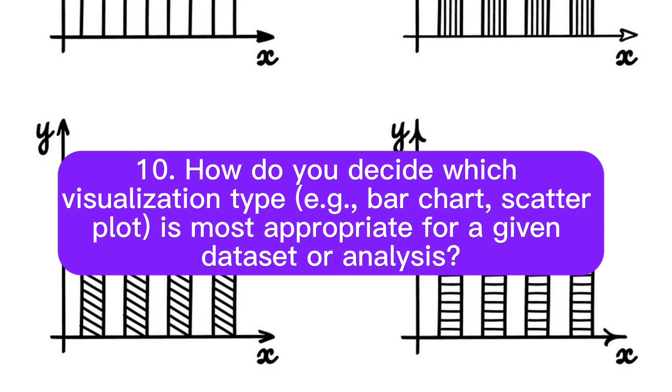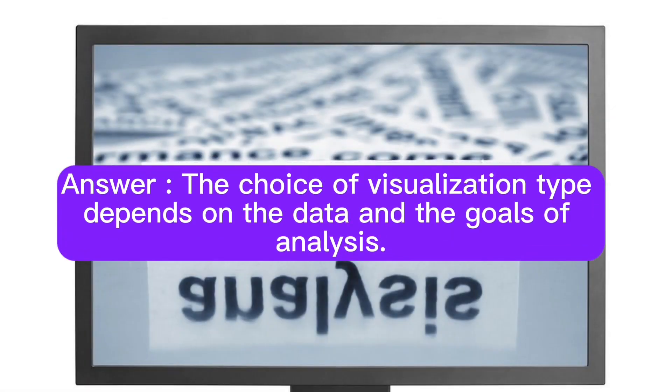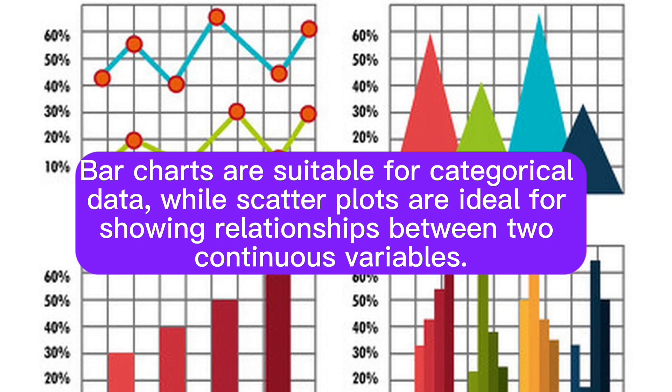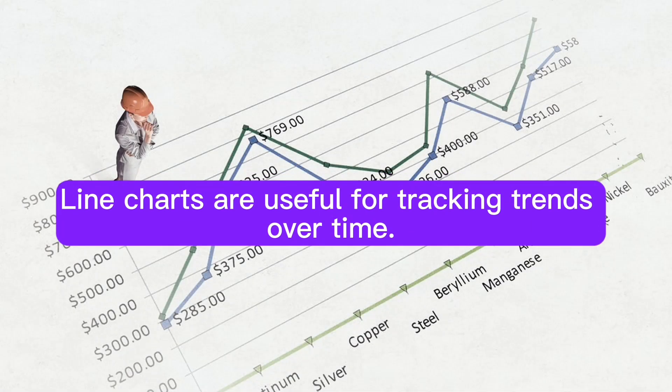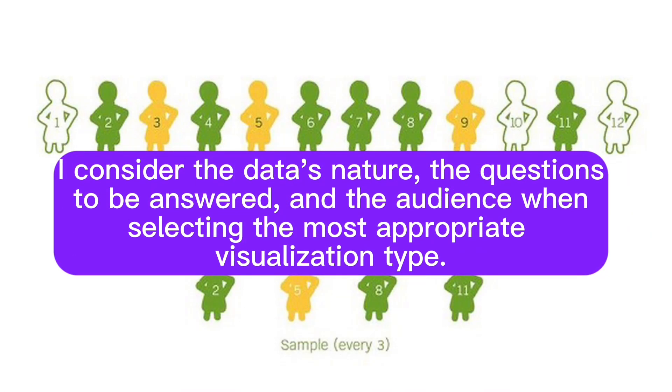Question 10: How do you decide which visualization type, for example bar chart or scatter plot, is most appropriate for a given dataset or analysis? Answer: The choice of visualization type depends on the data and the goals of analysis. Bar charts are suitable for categorical data, while scatter plots are ideal for showing relationships between two continuous variables. Line charts are useful for tracking trends over time. I consider the data's nature, the questions to be answered, and the audience when selecting the most appropriate visualization type.